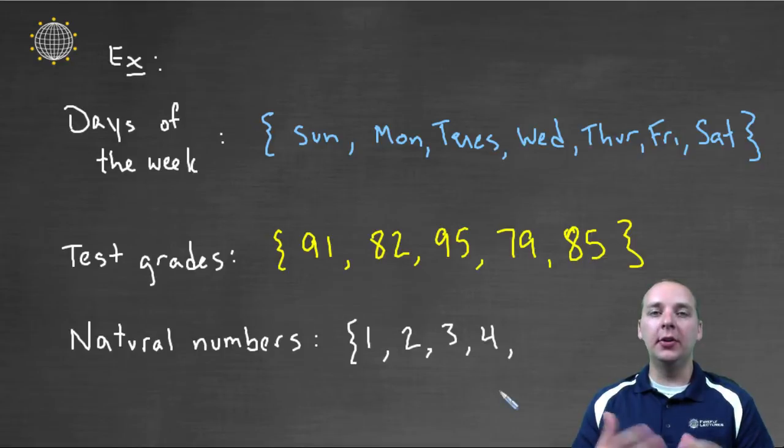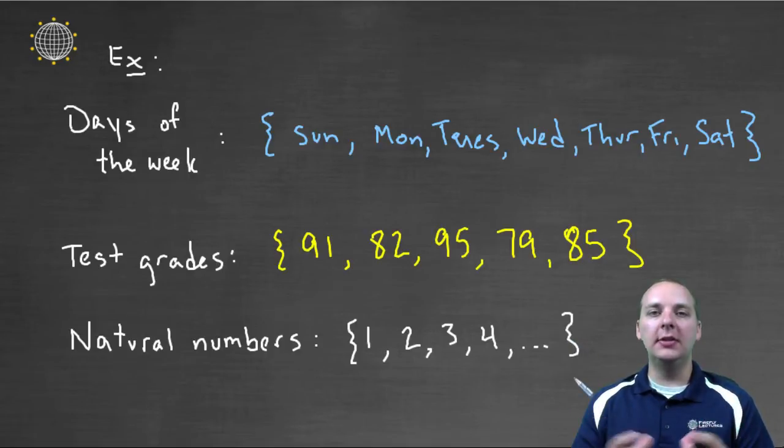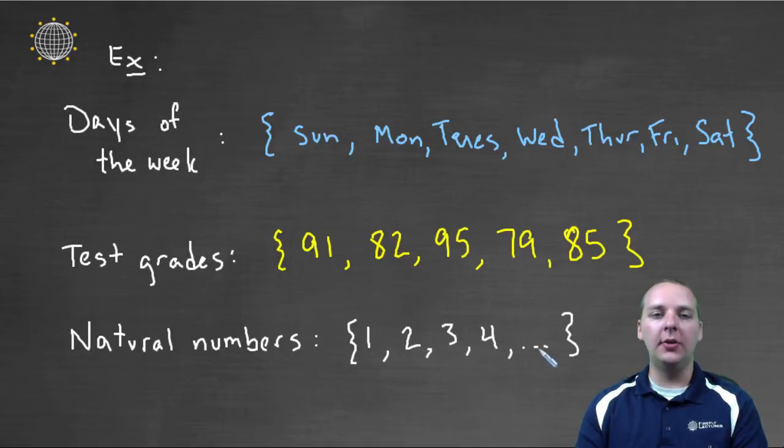And once it's clear to the reader of what that pattern is, and they could continue making more elements if they wanted to, then we can simply put a dot, dot, dot, and close off the brackets. And this would be an infinitely large set with infinitely many elements in it, as indicated by this dot, dot, dot. You are allowed to do that when you write a set.